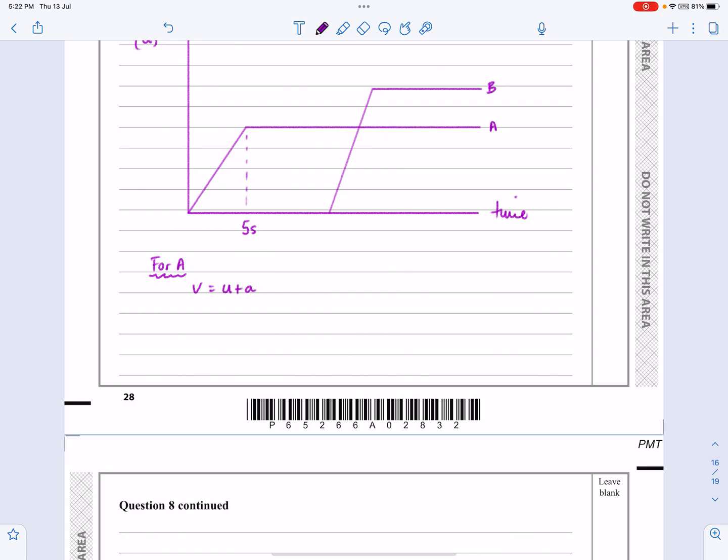So for A we could just use V equals U plus AT. Remember U is equal to 0. So it's just going to be 2 meters per second squared for five seconds. So it's just going to be 2 times 5, that's going to be 10 meters per second. Now I'll put it on here but I don't need it in terms of my sketch.